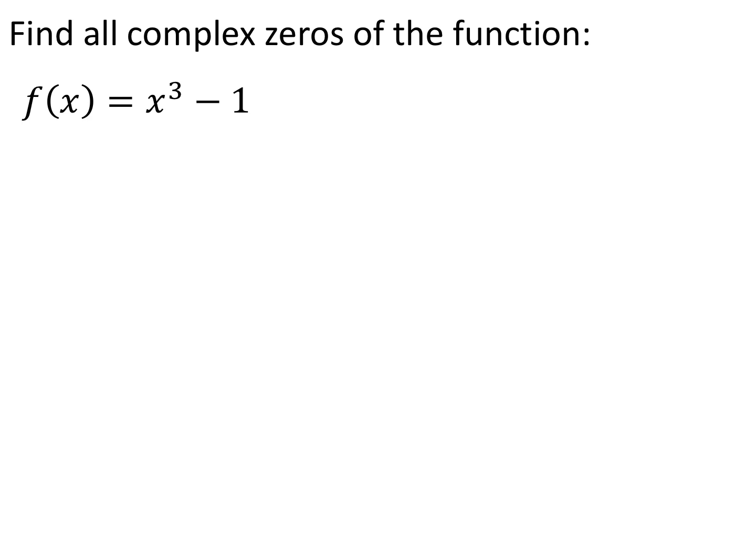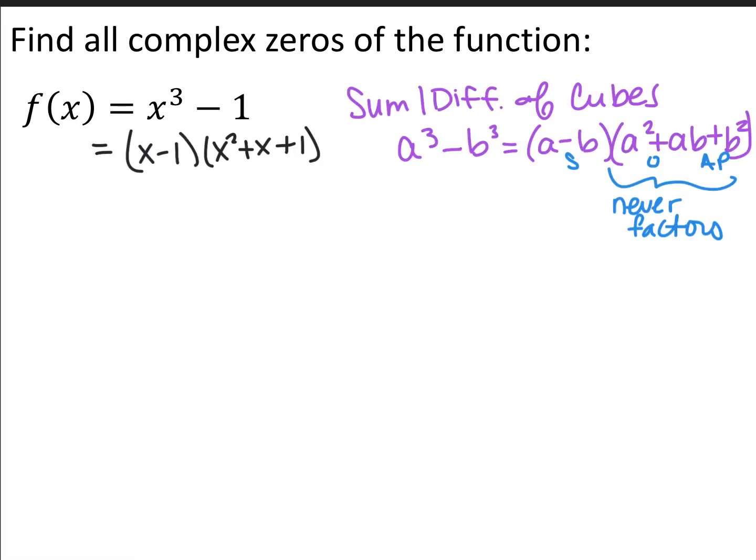So if we want to find all the complex zeros of a polynomial — that means all its zeros, real, imaginary, or a combination of the two — for this first one we have f of x equals x cubed minus 1. Based on the fundamental theorem of algebra, because this is a cubic function, I know this is going to have three zeros, whether they be all real, all imaginary, or a combination of the two. The first thing I notice is that I can factor this polynomial — it's a difference of cubes.